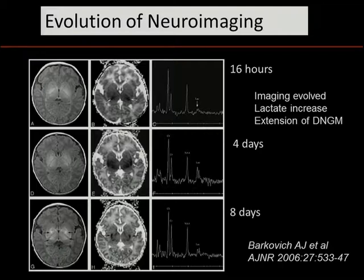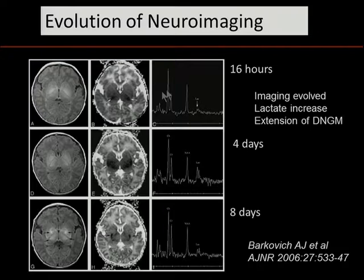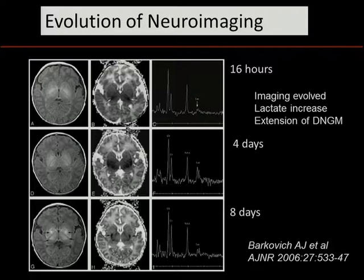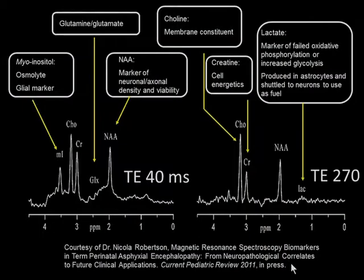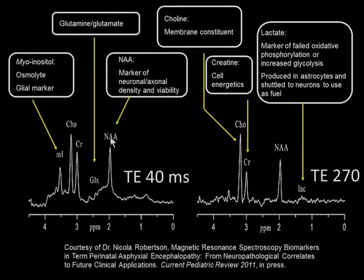Imaging changes following ischemic insults, and it does so in the term infant as well. This data from Jim Barkovich, repeated by many others, shows evolution in both T1 — from early where it is not apparent, through to being very apparent within the deep nuclear gray matter — the ADC maps showing early changes that become more apparent and then disappear by seven days, and spectroscopic changes with an early lactate peak becoming more apparent and then disappearing. Spectroscopy can be extraordinarily helpful, and whether done at a short or longer echo time gives multiple markers — neuronal integrity such as N-acetyl aspartate, or energy failure such as lactate.